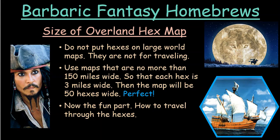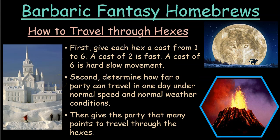Now for the fun part — traveling through the hexes. This is the innovative part: you want to give each hex a cost from one to six. A cost of two is a very fast hex — easy travel, probably has a good road. You can rip right through it with a very low travel time cost. But a cost of six means it takes a lot of travel time — maybe it's a high mountain with rocky cliffs, very slow going.